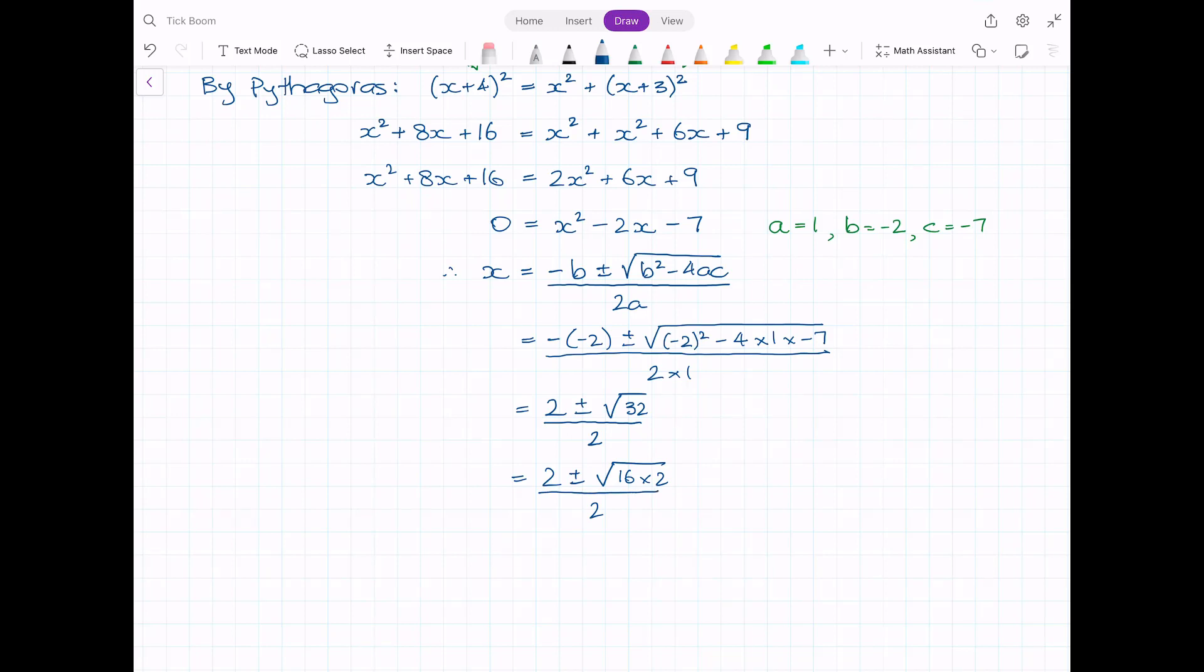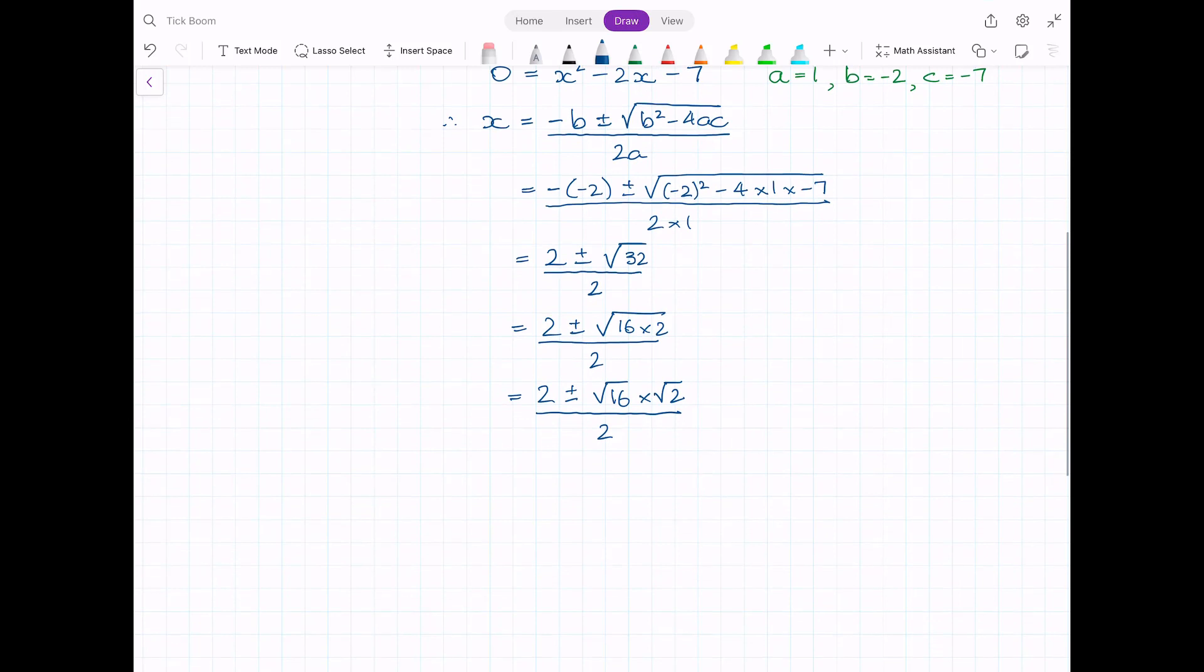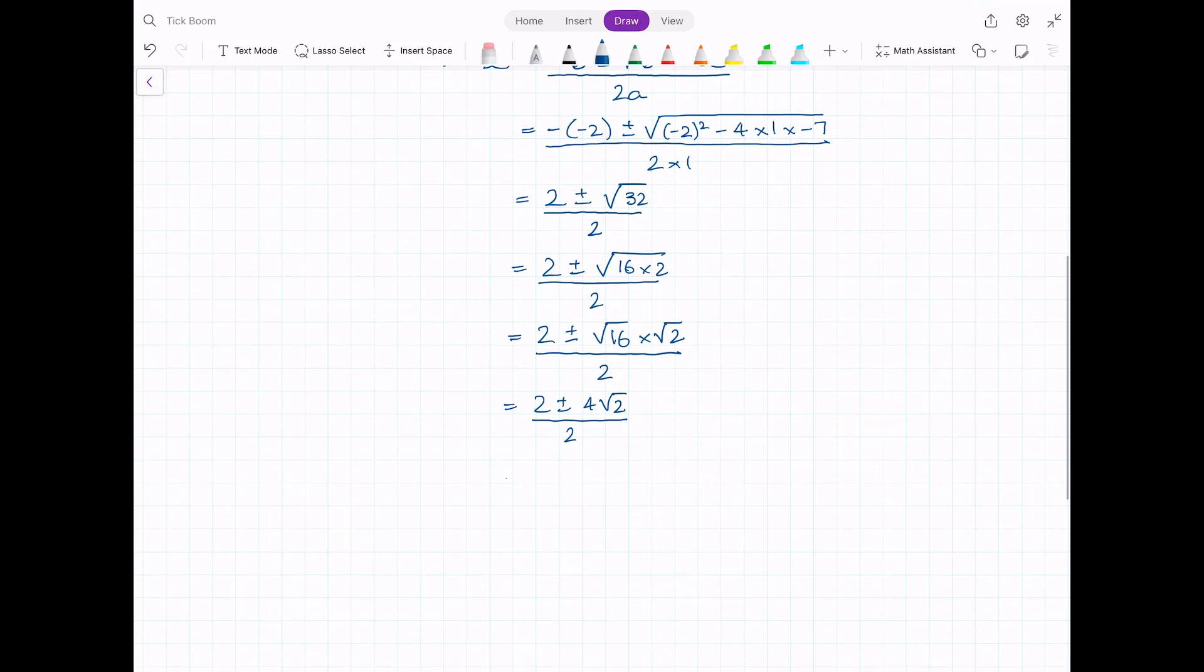That will help us clean up this radical because it will become 2 plus or minus the square root of 16 times 2, which becomes the square root of 16 times the square root of 2, all divided by 2. The square root of 16 is 4, so we end up with 2 plus or minus 4√2 over 2. I can divide 2 into the numerator and I'll end up with 1 plus or minus 2√2.